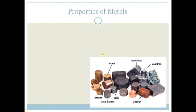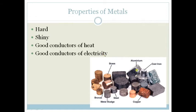Let's look at the properties of metals. They are hard, shiny, good conductors of heat, and good conductors of electricity. Here are some examples of different types of metals.